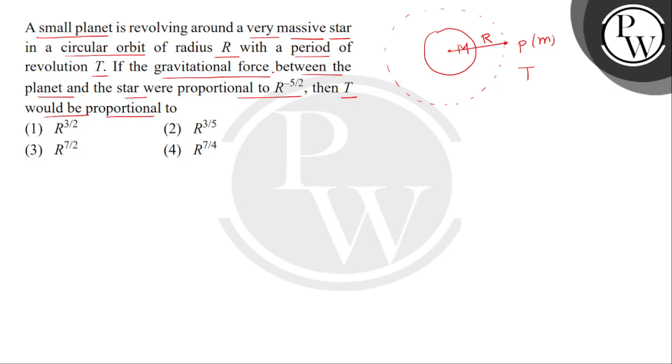Given हैं कि gravitational force, F, is directly proportional to r to the power minus 5 by 2. So bachiyo, हमें बताना हैं कि जो time period of revolution है, यह किस तरह से radius पर depend करेगा. This is unknown for us.